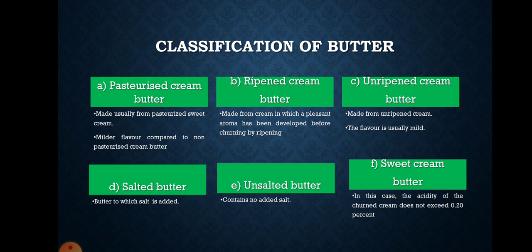Before going to the process flow chart of butter manufacturing, we will see the classification of butter. Many kinds of butter are found in the market — they differ with the type of cream from which they are made and with variations in the manufacturing process. Unless specifically mentioned, the different kinds of butter may or may not have been salted. A brief description of several types is given in this slide.